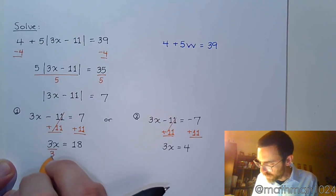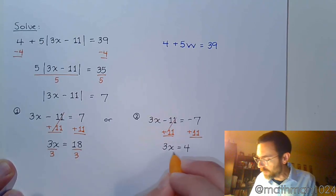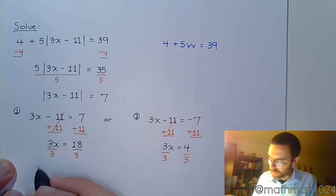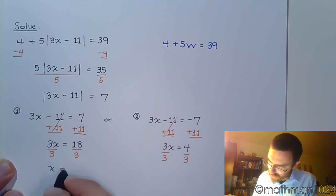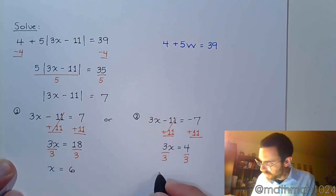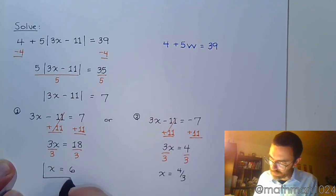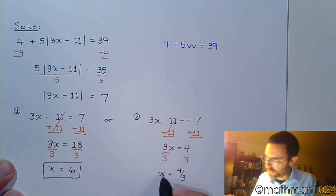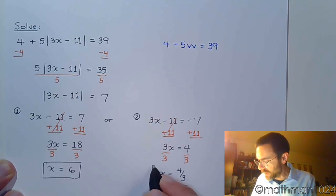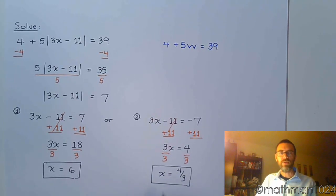One final step, dividing by 3. So x is equal to 6, and over here, x is equal to 4 thirds. So it's really not too bad to separate these guys and get your two answers.